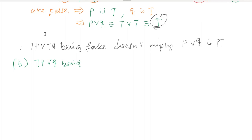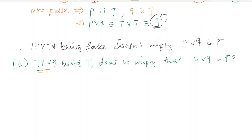For part B, the condition is: negation of P or Q is true. Does this imply that P or Q is false? We have a disjunction here. In general, can we say that P or Q is false whenever negation of P or Q is true?